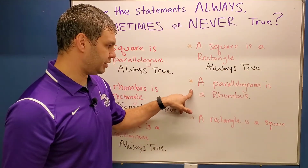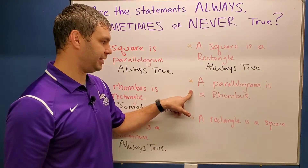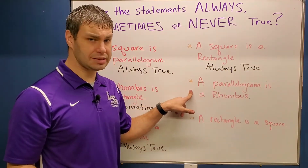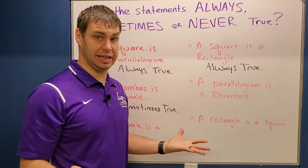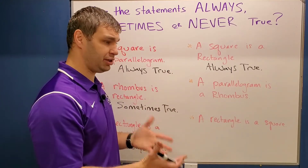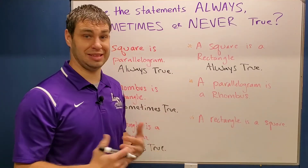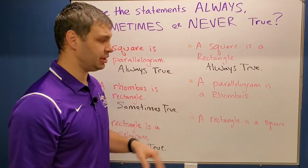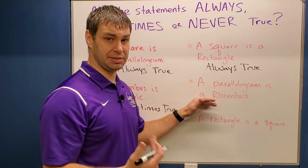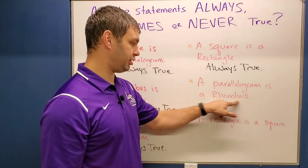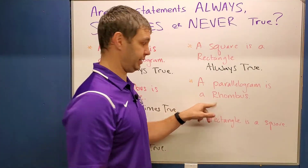The next one says a parallelogram is a rhombus — sometimes. You can have a parallelogram that's not a rhombus, so this is only sometimes true, when all the sides are the same.